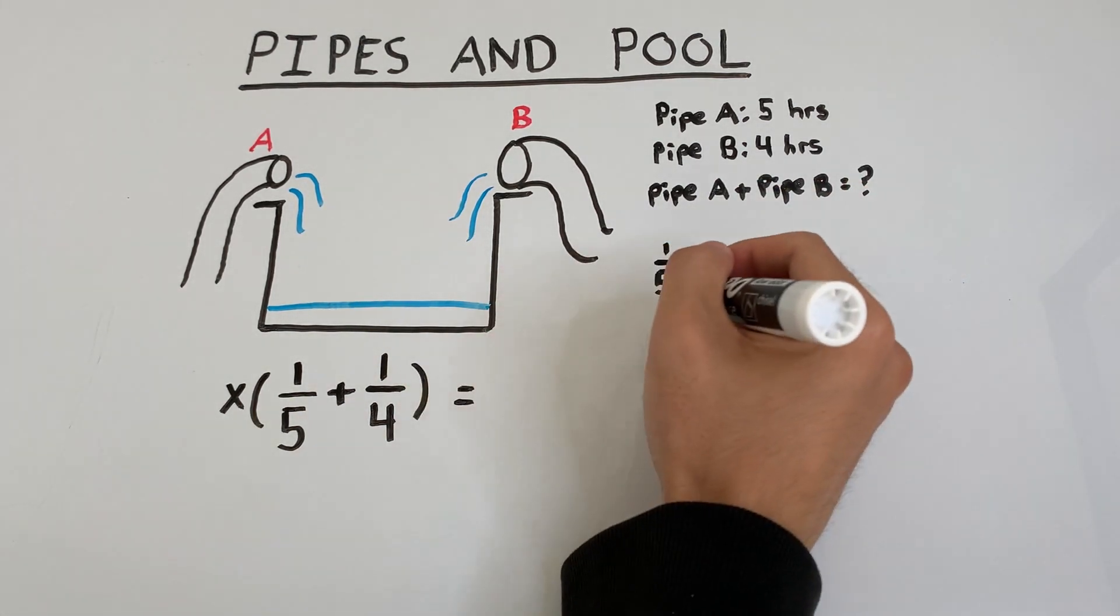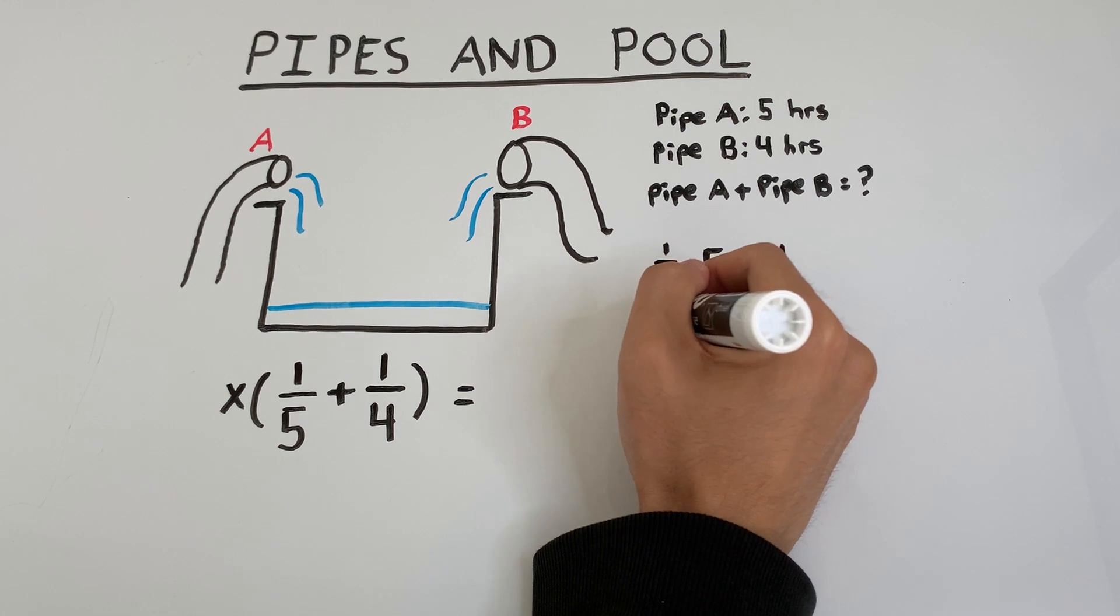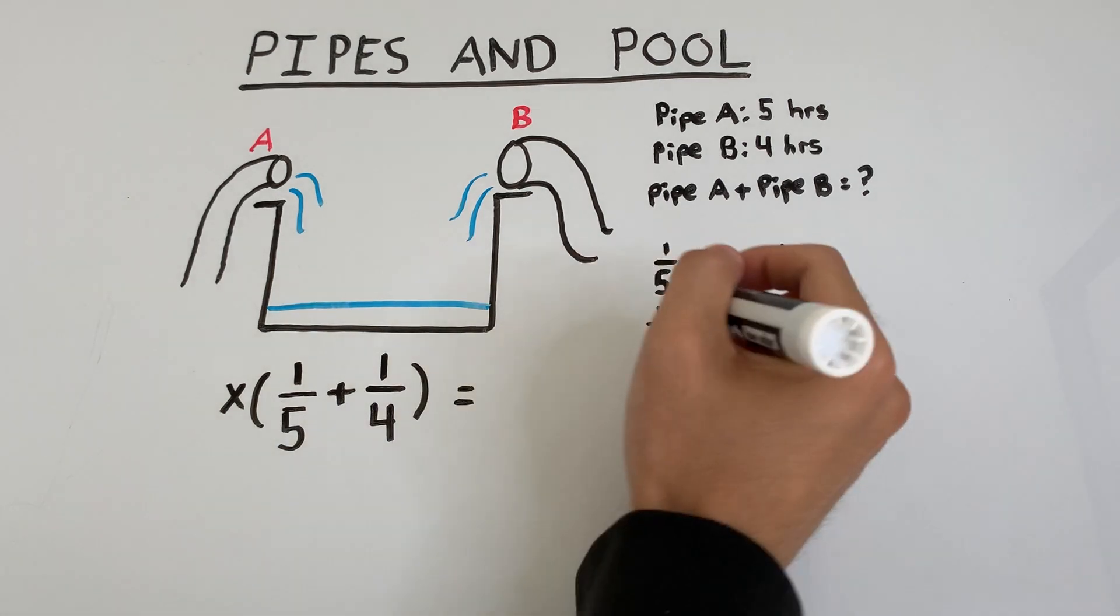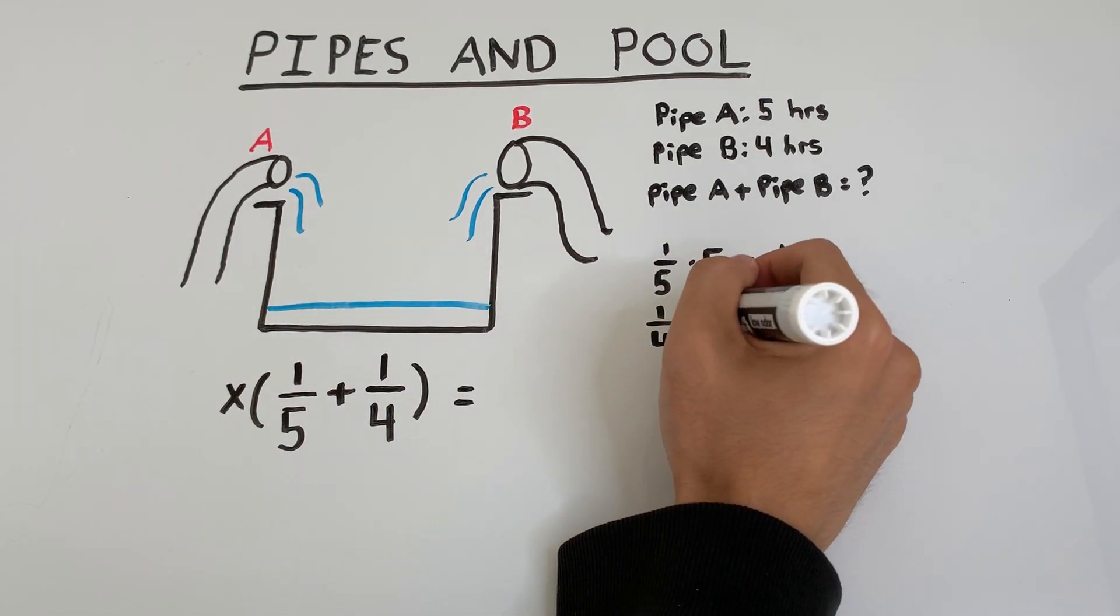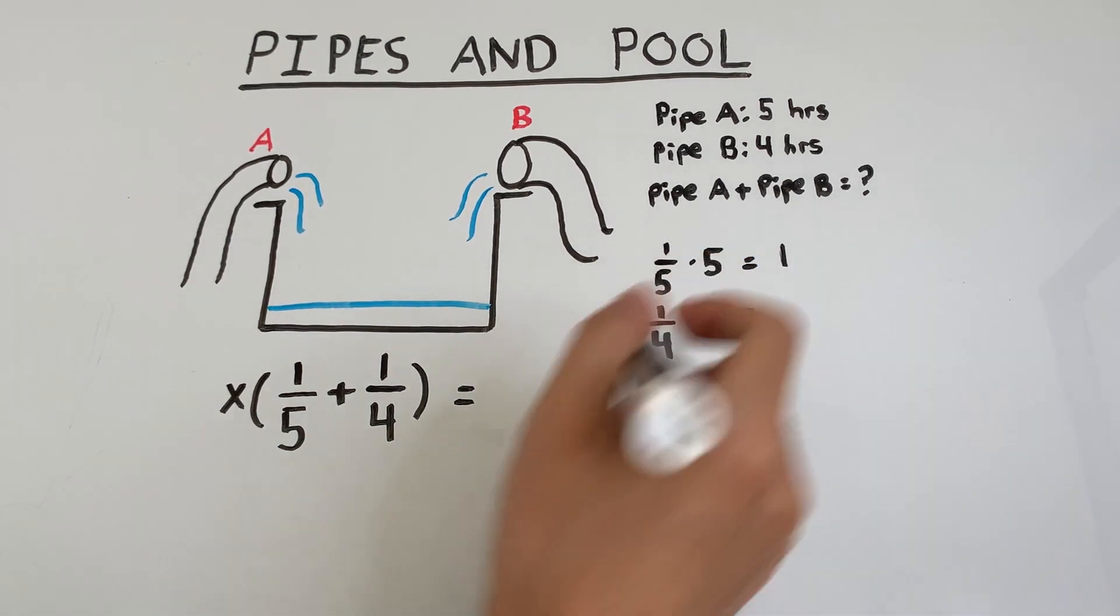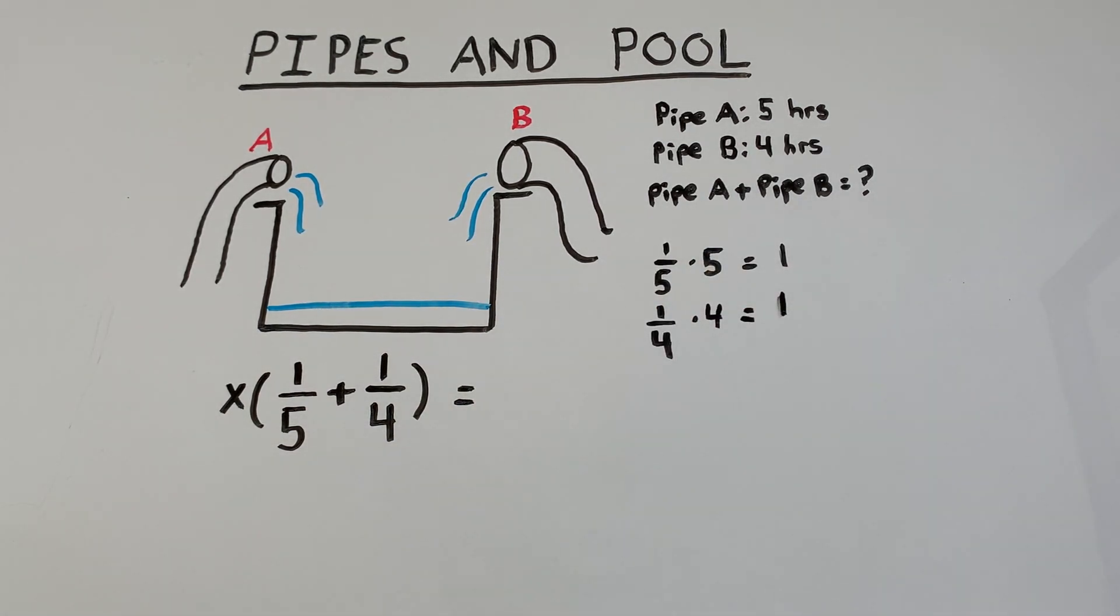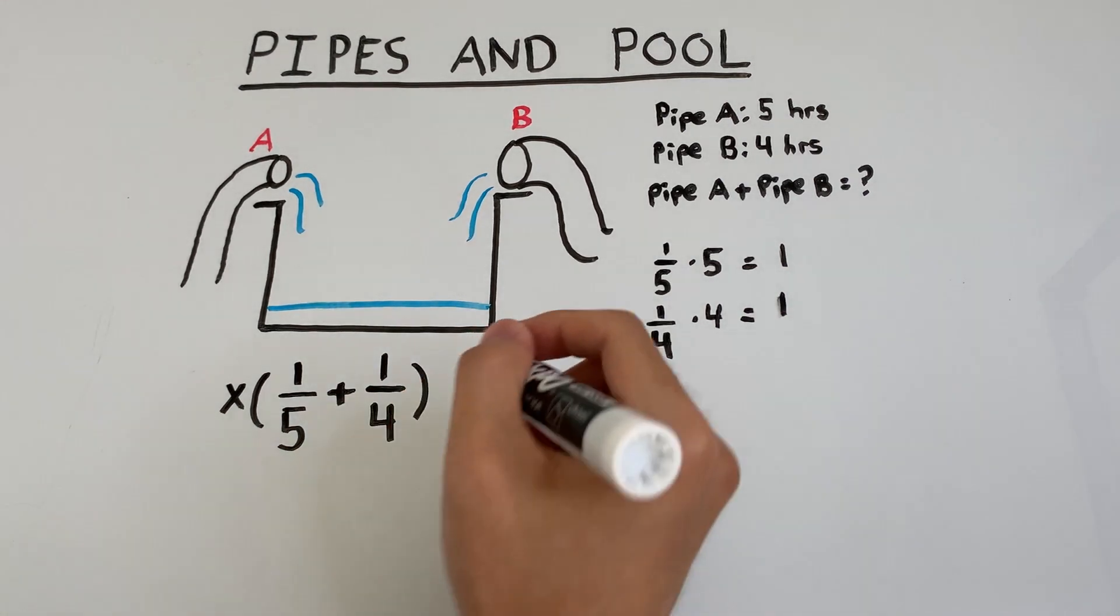Pipe B fills at a rate of a fourth of the pool and it's on for four hours, and that's how long it takes to fill one pool. So we see that when they're both on, X times one over five plus one over four should be set equal to one.